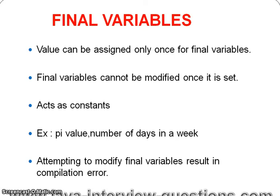For example, we can take the number of days in a week. The number of days in a week remains the same always — it is always 7. So we can declare number of days in a week as final. Whenever we need to declare final variables, if the value doesn't change and remains the same throughout our application or program, we declare it as final. Another example is the PI value: PI is 3.14 and it remains the same throughout our application, so we can declare PI as a final variable.